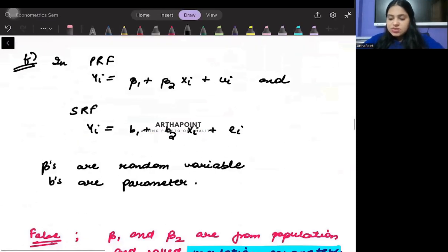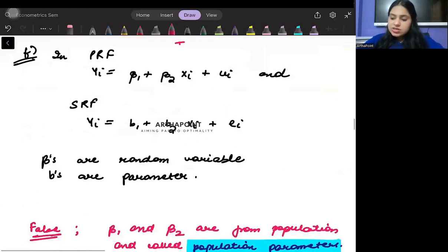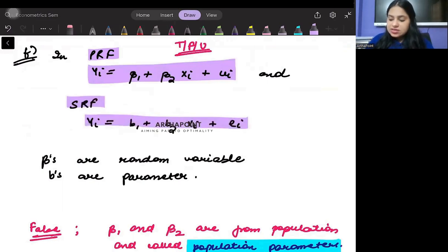Let's look into another statement. Again, we have to tell whether the statement is true, false, or uncertain. Look into the statement: You're given that in population regression function, yi equals beta 1 plus beta 2 xi plus ui, and in sample regression function yi is...